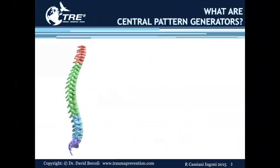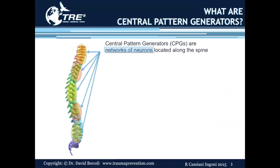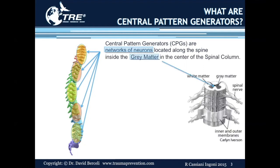Let's look at what central pattern generators are. Central pattern generators are networks of neurons located along the spine. They are inside the gray matter in the center of the spinal column. We do not see these — they have to be seen under a microscope. They are simply a network of neurons in the gray matter in the center of the spinal column.